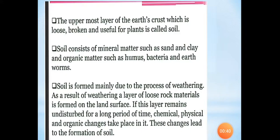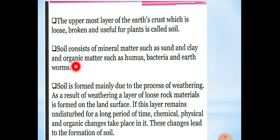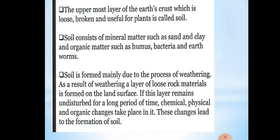What is soil? The uppermost layer of the earth's crust which is loose, broken and useful for plants is called soil. Soil consists of minerals, matter such as sand and clay, and organic matter such as humus, bacteria and earthworms, which are very beneficial for the growth of the plants.